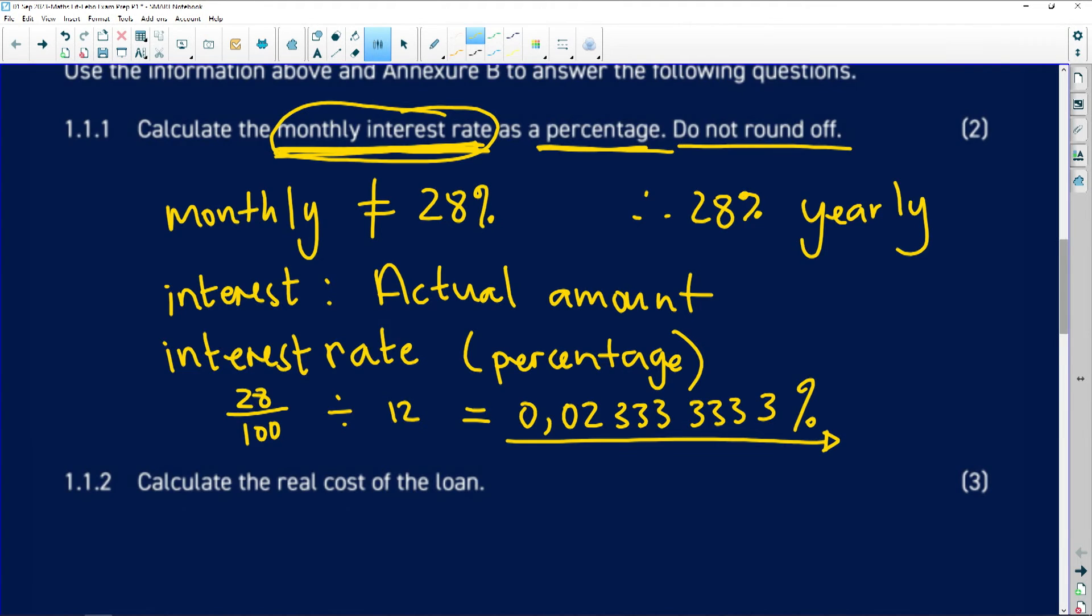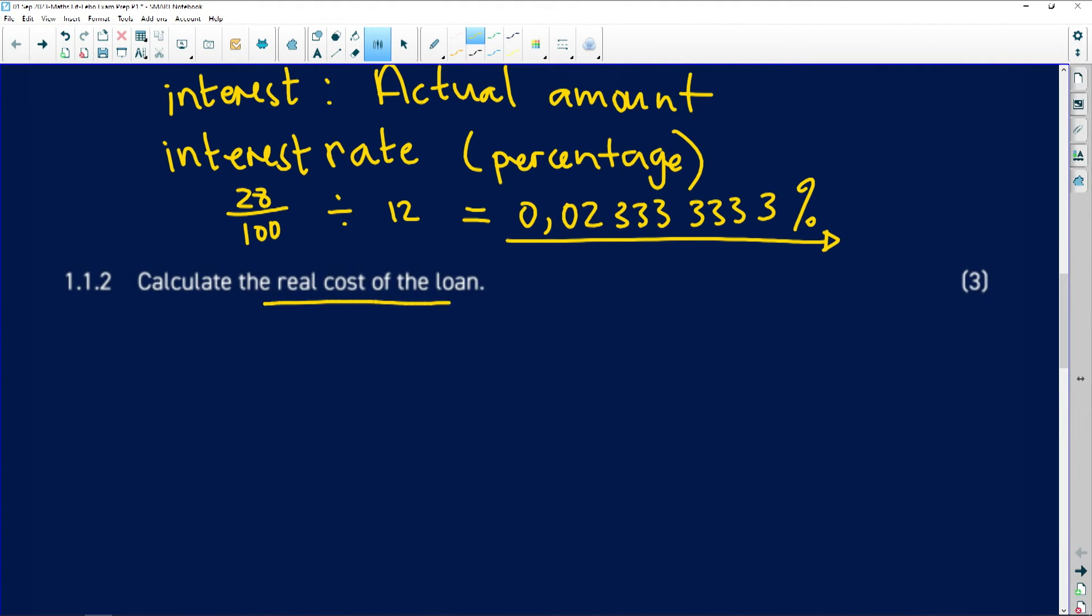So let's look at the next question. The next question says to us, real cost of the loan. In most cases, a lot of learners think that when you are asked for the real cost, you are asked for the initial cost that was put in the principal amount. So the 30,000 is the principal amount, it's the loan amount, but the real cost of the loan is how much you are actually putting back to the bank or back to the person who's loaned you.